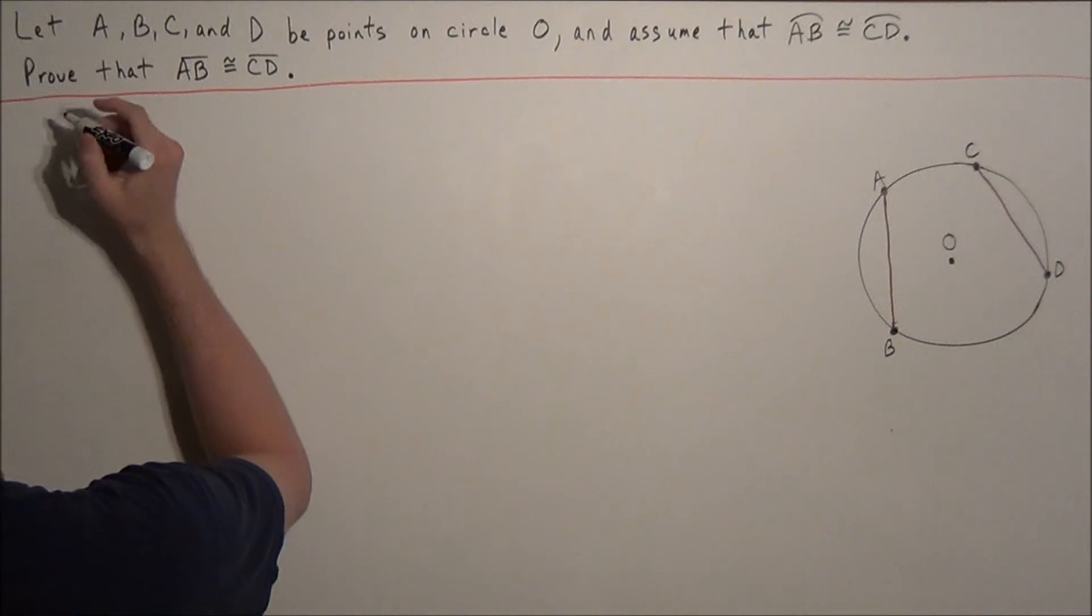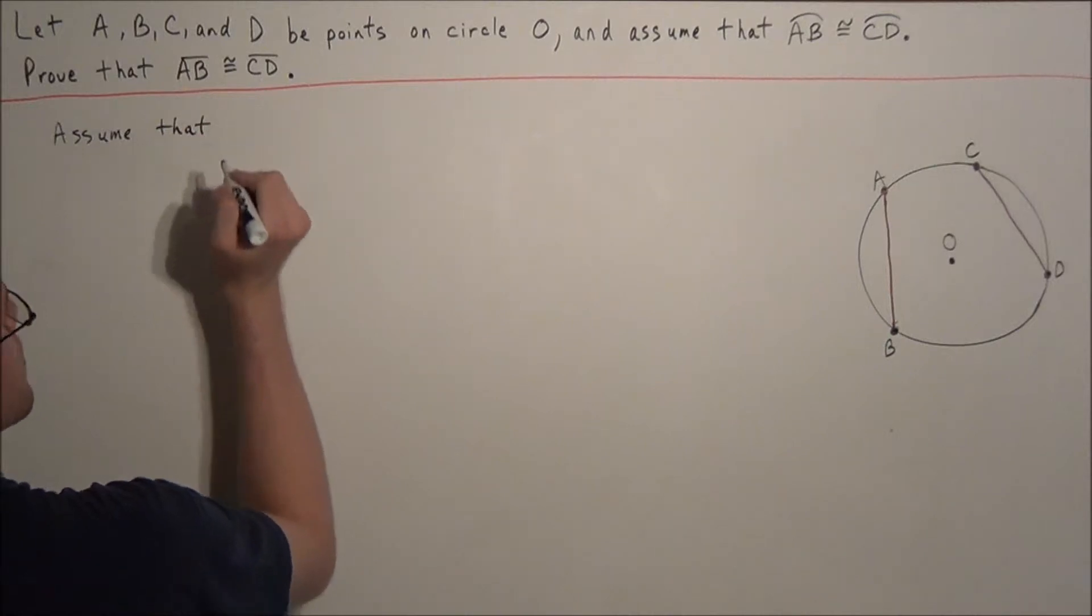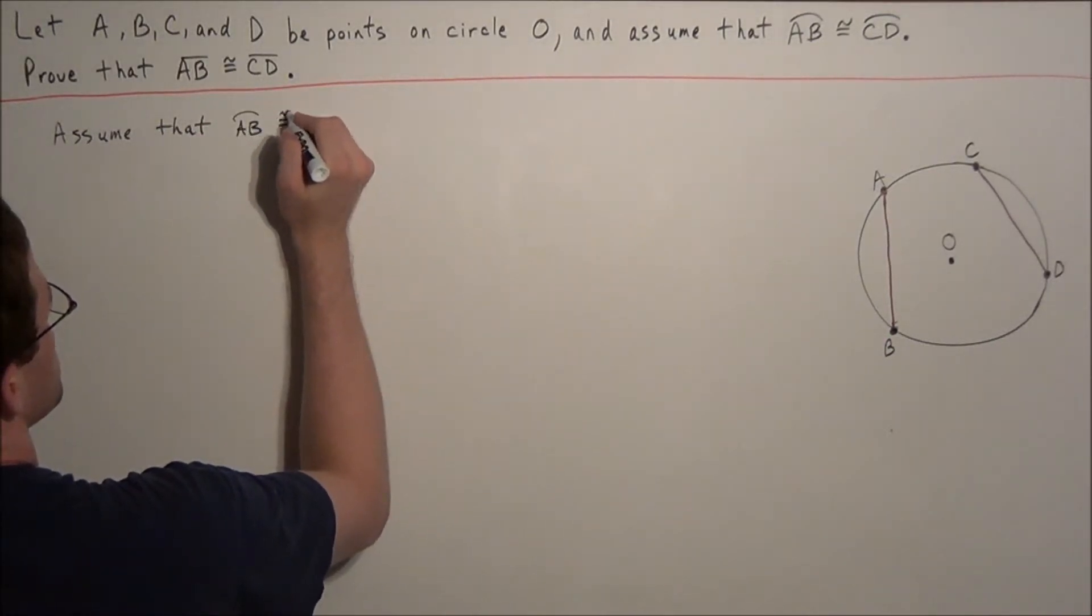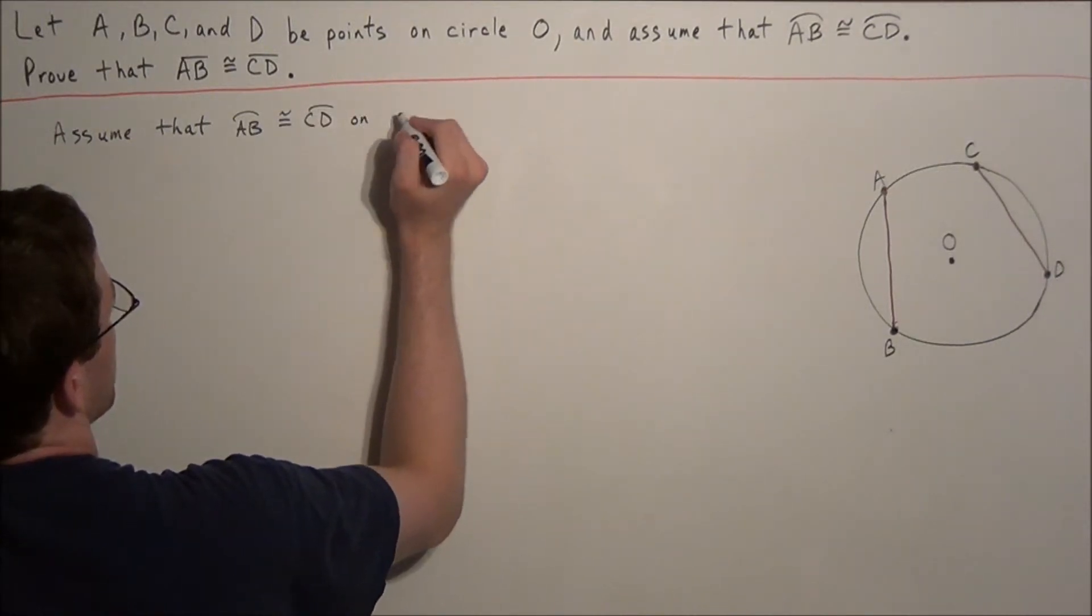So the first thing we want to do is assume that arc AB is congruent to arc CD on circle O, and we can do this because this information was given to us.